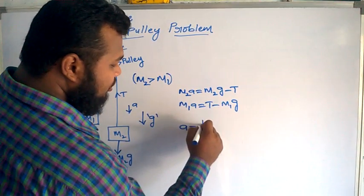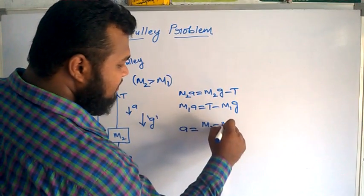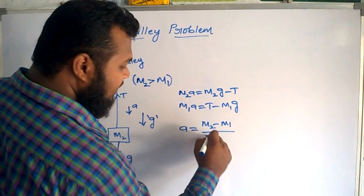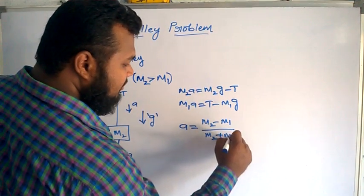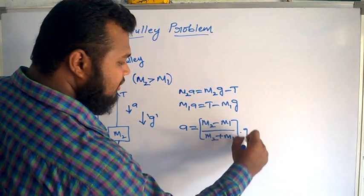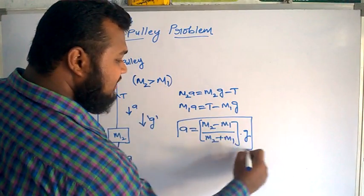You will get a equals (m2 minus m1) divided by (m2 plus m1) multiplied by g. So this is the acceleration of the system.